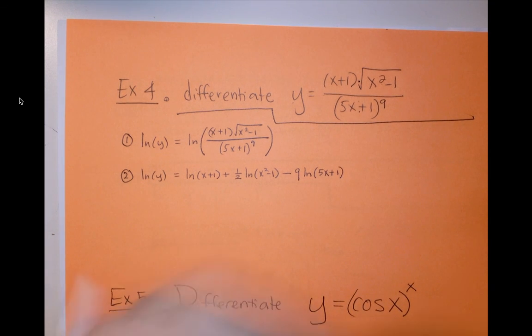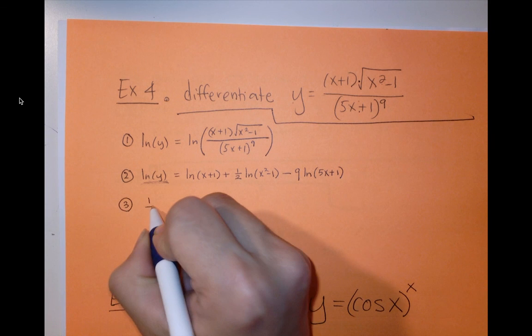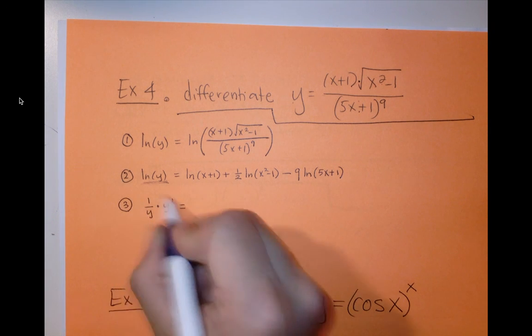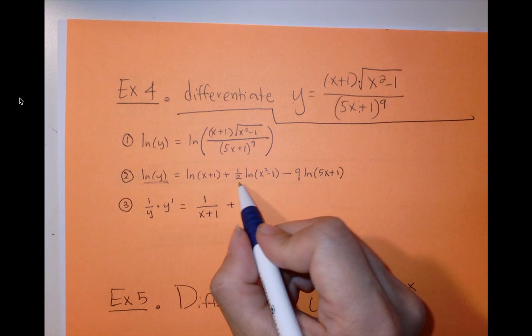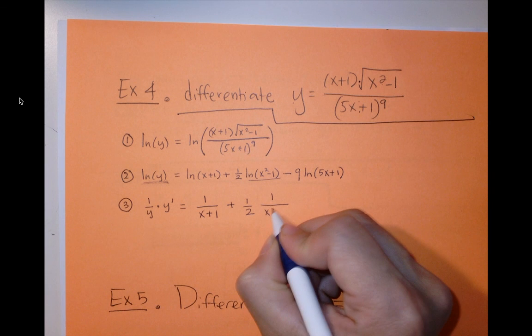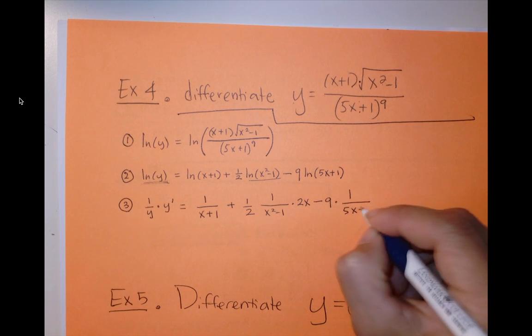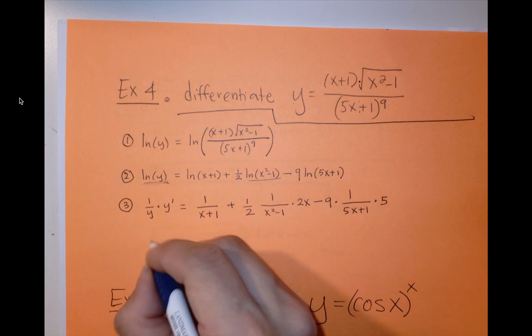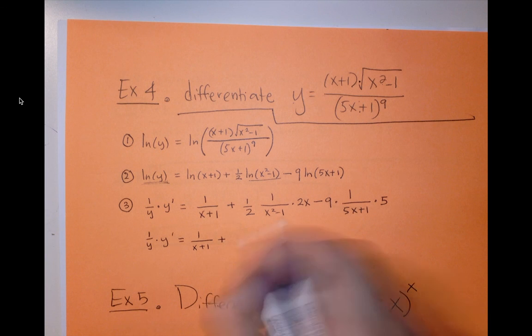Now that I've expanded it, the next step I'm going to do is I'm going to use implicit differentiation. So implicit differentiation. First, I'll take the derivative of this with respect to x. So we get 1 over y times y prime. I use the chain rule here. Derivative of this with respect to x is 1 over x plus 1. 1 over x squared minus 1 times 2x. So I'm using the chain rule there. Minus 9 times 1 over 5x plus 1 times 5. So I'm cleaning this up a little bit. I get 1 over y times y prime.